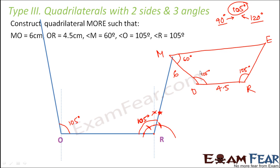Now we need to find point M, knowing that MO = 6 cm. Place the compass center at O and draw an arc at a distance of 6 cm along the ray from O. Wherever that arc falls is point M, since the distance OM is given as 6 cm. At this point, most of the diagram has been drawn.